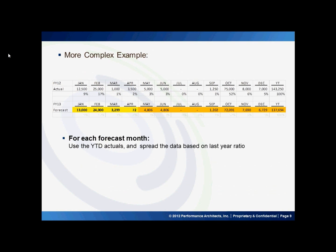This example shows a bit more complexity. Here, the ratio of last year's actuals to the year total is utilized to derive the dollars for the out months of the forecast.